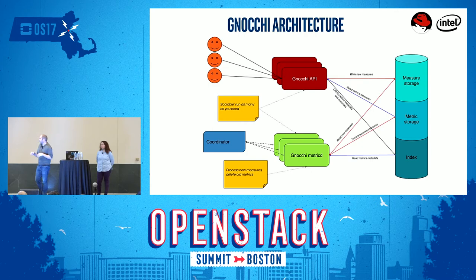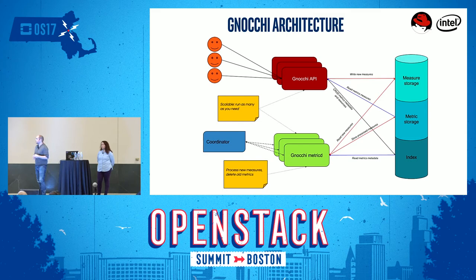The MetricD workers are also stateless, so you can spawn as many as you need to have your metrics computed in real time or with some delay if you have cheap hardware. Everything is coordinated through a coordinator, which is usually a Redis server or etcd server. In this schema, where we're going to plug CollectD is at the same place as the other services — through the API. CollectD is going to talk to Gnocchi through its API to send new metrics, exactly where Ceilometer in a classic OpenStack deployment puts its data.